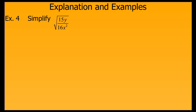Here's another quotient example. We split it apart into numerator and denominator, then we take the square root of the denominator. Since the numerator can't be simplified, this is simplified form.